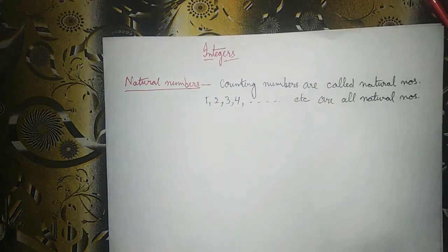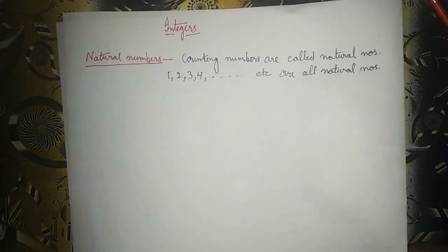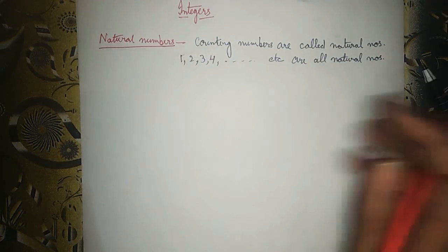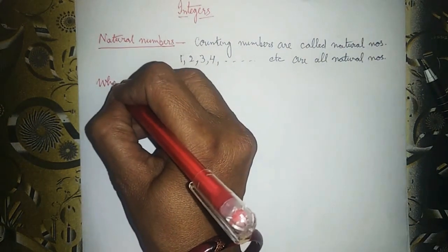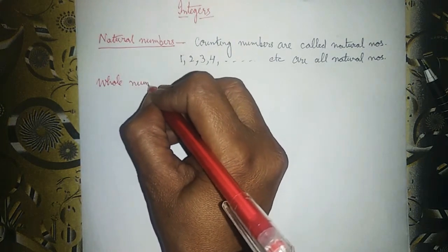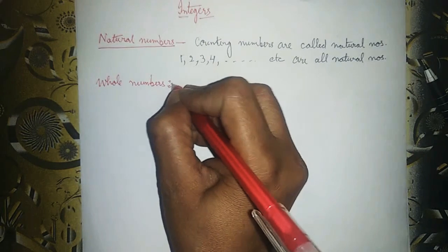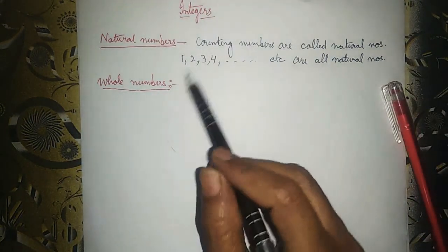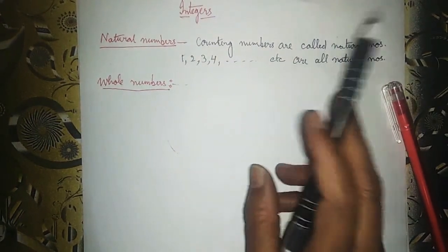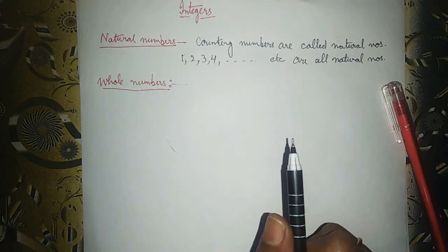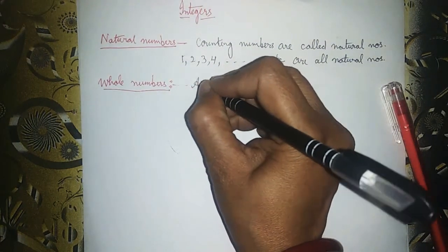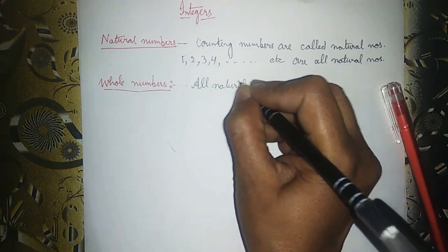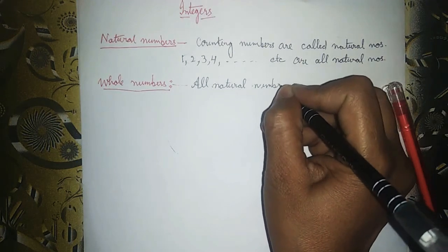Now, students, I will tell you about whole numbers. You have studied about whole numbers also in Class 6. Again I am telling you: all natural numbers together with 0 are called whole numbers.